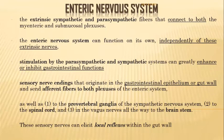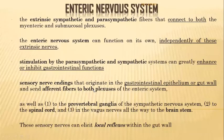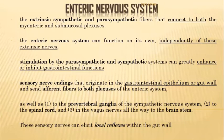The extrinsic sympathetic and parasympathetic fibers connect to both the myenteric and submucosal plexuses, modulating or controlling them. The enteric nervous system can function independently of these extrinsic nerves - just like the heart can function after denervation. Stimulation by the parasympathetics and sympathetics can greatly enhance or inhibit gastrointestinal functions depending on the neurotransmitters released.